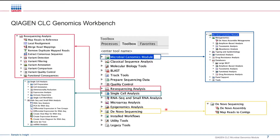I also highlighted the additional capabilities for de novo assembly, namely because in the microbial space there's often potential for customers doing de novo assembly. Keep in mind, I'm only highlighting four areas within the Genomics Workbench. But if you're doing traditional molecular biology, there are functionalities for that, along with quality control, microRNA, epigenomics, ChIP-seq, and bisulfite sequencing as well.